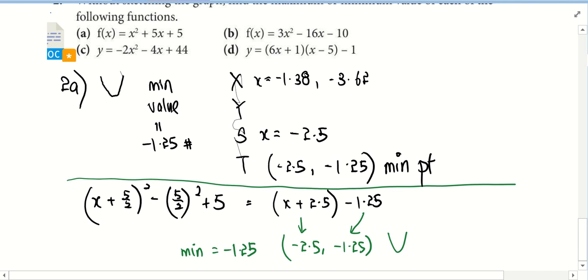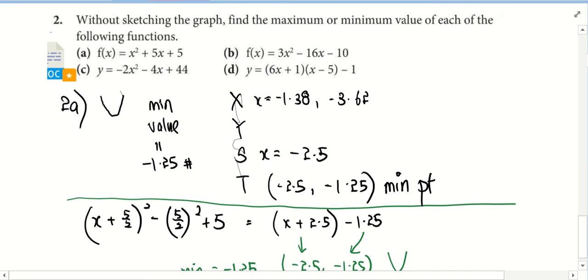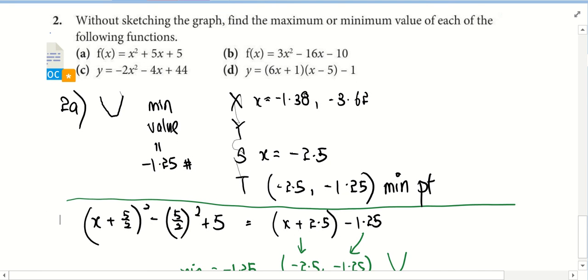But if there is a choice, you look at these two methods - which method looks faster? Completing the square, right? But you must make sure your completing the square cannot make mistakes, because it will affect you. All right, with that we are done.